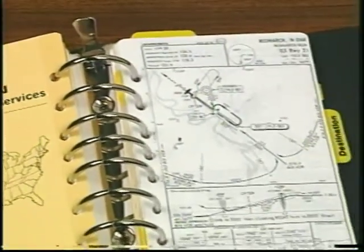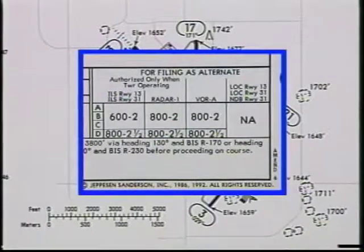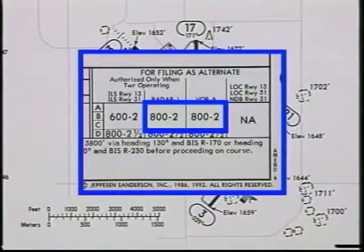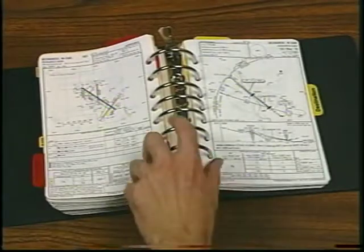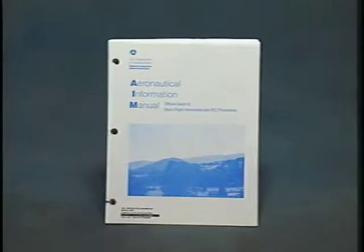You should also review the airport information of your possible alternate. In addition to the approaches available, you should check the alternate minimums so you'll know if you can use Bismarck when filing for an alternate. In this case, the minimums are 600/2 using the ILS approaches or 800/2 when using the RADAR-1 or VOR-A approaches. Referring to the airport facility directory, check the listings for the destination and alternate airports for fuel availability, services, and special airport precautions. For example, at Jamestown the airport is attended continuously and you should be alert for birds on and in the vicinity of the airport. Before your flight, you may also want to brush up on ATC procedures by reviewing the Aeronautical Information Manual. It is a good practice to periodically review the AIM to keep abreast of any recent changes.